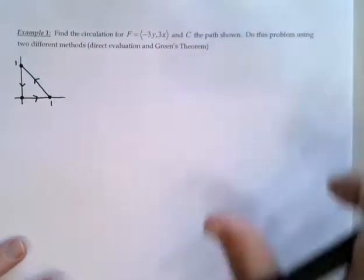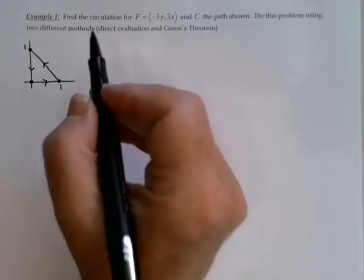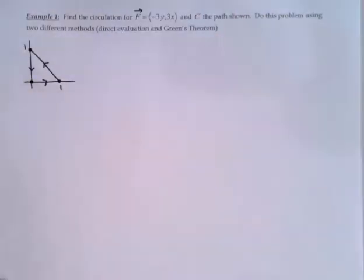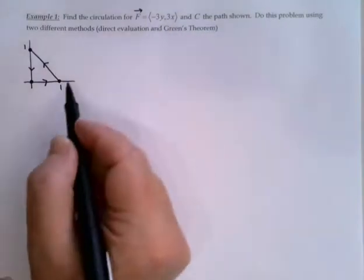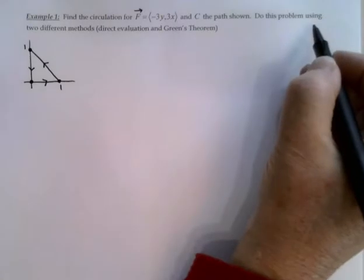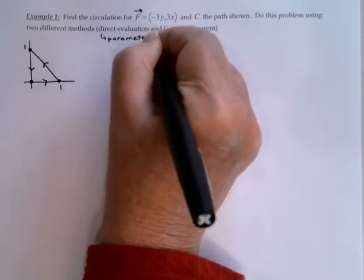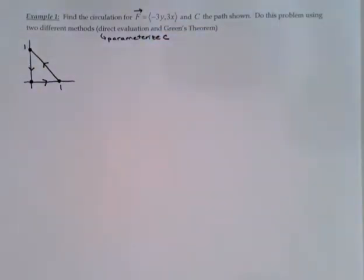Let's look at an example of using Green's theorem. I haven't proven this theorem to you, kind of like the FTC - if you're interested, take a look at the book. But I'd like to do at least one problem two different ways, just to show we get the same answer with Green's theorem as we would by parameterizing. In this next problem, we're going to find the circulation for the vector field f equals <-3y, 3x>, where c is this path - a triangle with vertices at the origin and at 1 on both the x and y axes. We're going to do the problem two ways: direct evaluation, which represents parameterizing the curve, and Green's theorem, our new method.